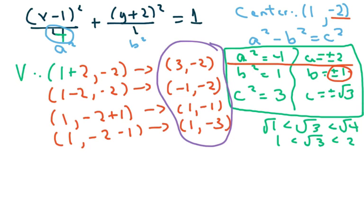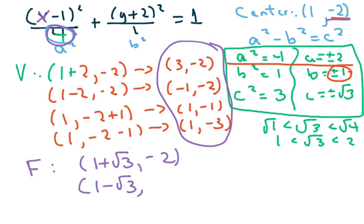Your foci is under the bigger number. The bigger number is the 4, which is under the x, so it's going to go on the x. So your foci is going to be 1 plus root 3. Whoops. Foci is a point. Comma, just copy down again your negative 2. And 1 minus square root of 3, comma negative 2. And just leave it like that. And anything else?